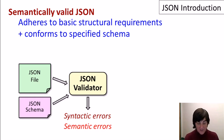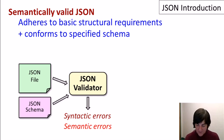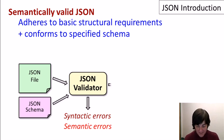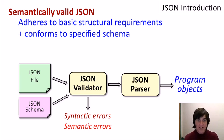We send it to a validator, and that validator may find that there are syntactic errors, or it may find that there are some semantic errors — so the data could be correct syntactically but not conform to the schema. If it's both syntactically and semantically correct, then it can move on to a parser, where it will be parsed into objects in a programming language.